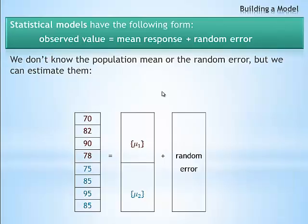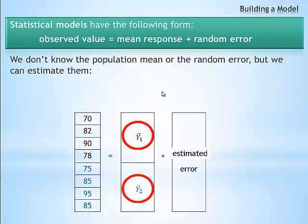One key issue that we always need to consider when creating a statistical model is the difference between parameters and statistics. We don't know the parameters, the true mean response from the entire population, or the real error term. So, instead of using the actual population mean, we are going to use the statistic y bar, which is the mean calculated from our data, also called the sample mean.